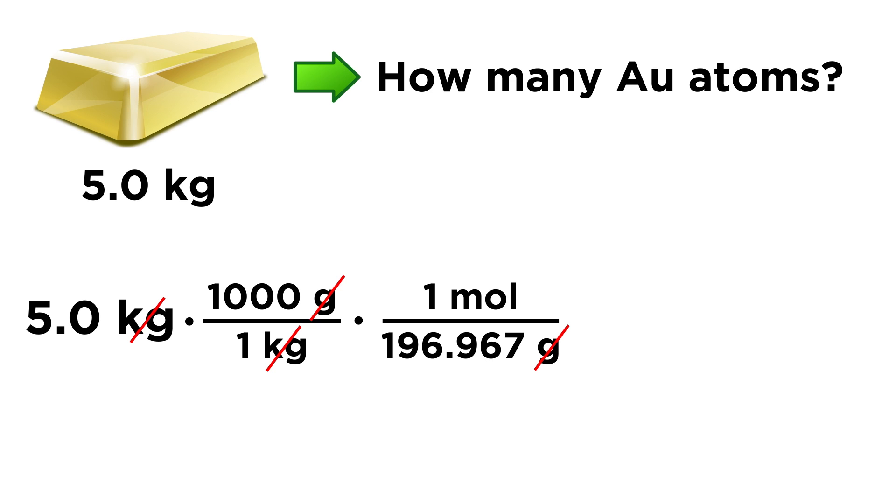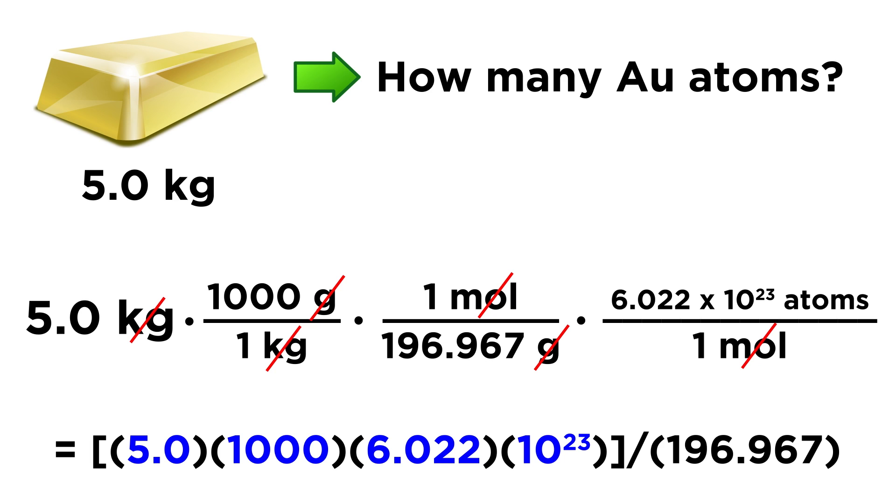We have the number of moles of gold atoms. And now that we have the number of moles, which is a number, we're going to use Avogadro's number to get this into the number of atoms. So for however many moles of gold atoms we have, we simply multiply by 6.022 times 10 to the 23rd atoms over one mole, because those are equivalent. Avogadro's number is the number of items of any object that are in one mole. Those are equivalent. That is the definition of a mole. So now moles will cancel. And we have a value in atoms, or number of atoms.